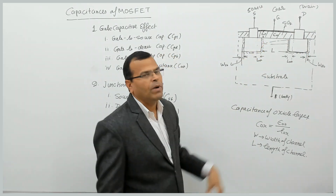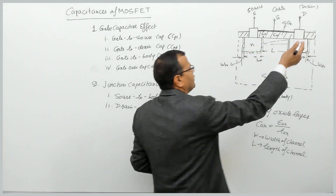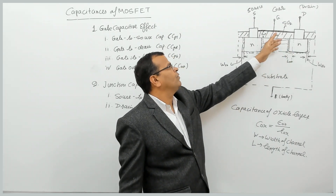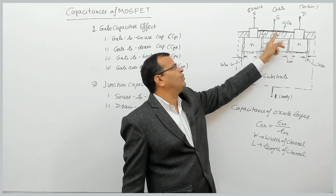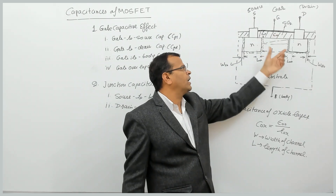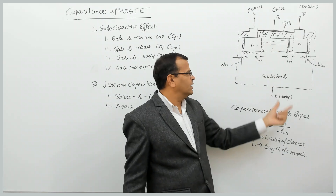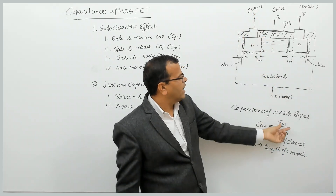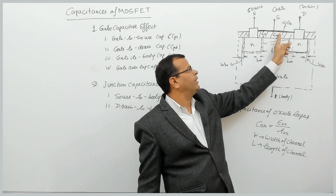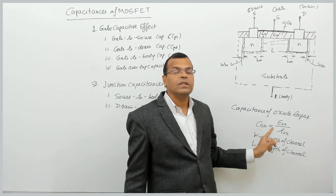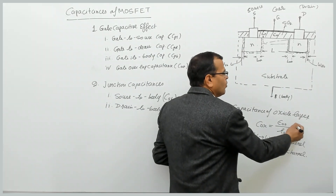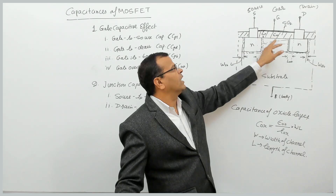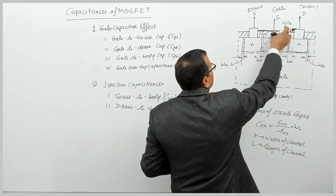For an N-channel MOSFET, the source and drain layers are N-type. The region between the drain and source layers is called the channel. We have an oxide layer between the gate electrode and the channel, which offers some capacitance. That capacitance per unit area is given by C_ox = ε_ox / T_ox, where T_ox is the thickness of the oxide layer and ε_ox is the dielectric constant of the oxide layer.